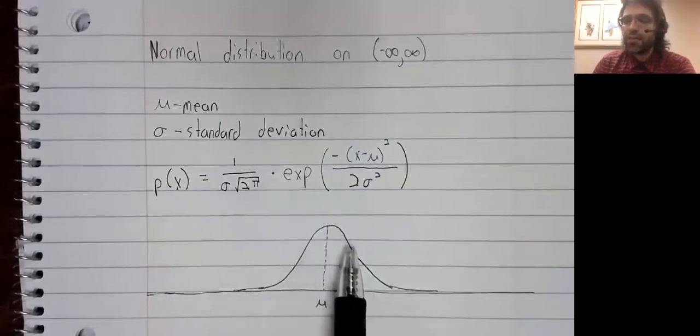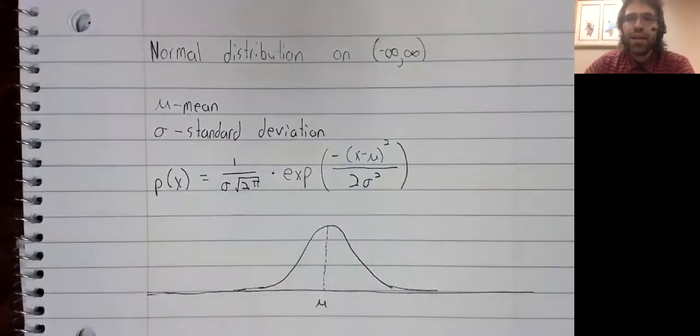look like this curve. And if something doesn't follow the normal distribution, it's somehow a problem. Like that's where the idea of curving tests comes from.